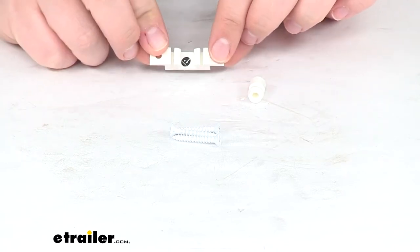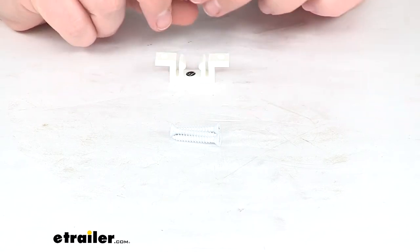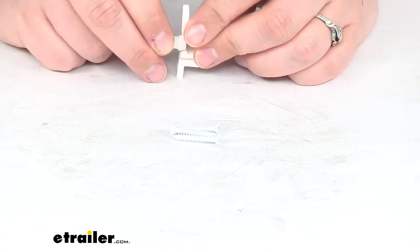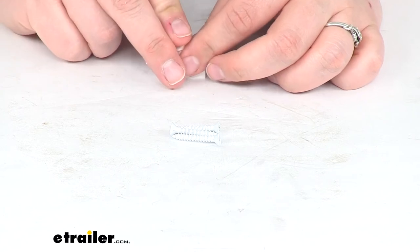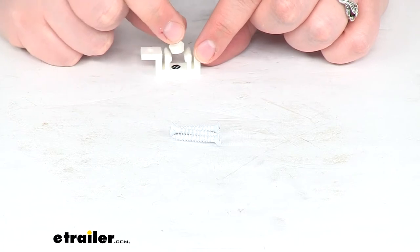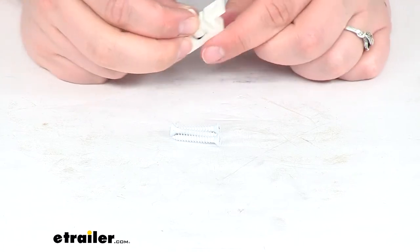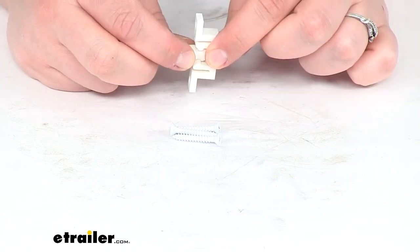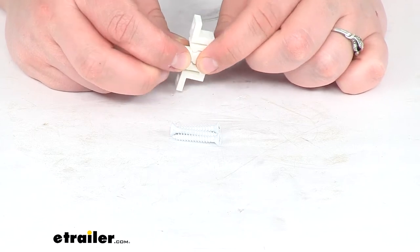This is just going to be a little latch with a post to help keep that door closed on your RV. Basically that little post just goes into the slot there and holds it in place. Just a little thing to keep everything together.